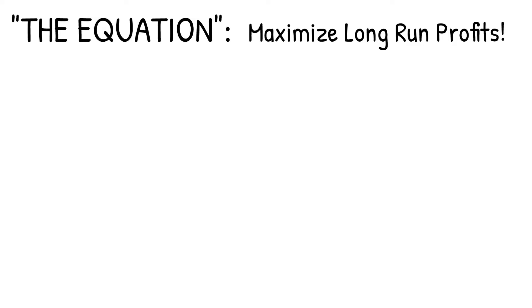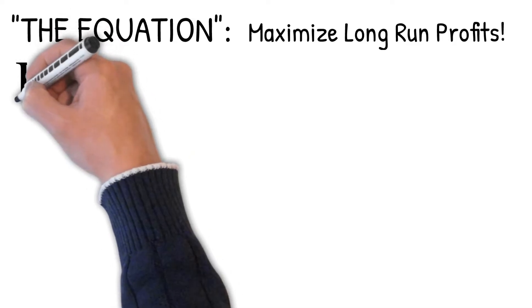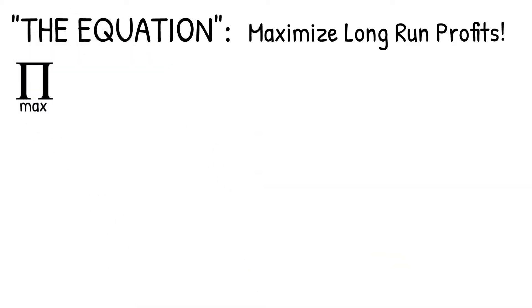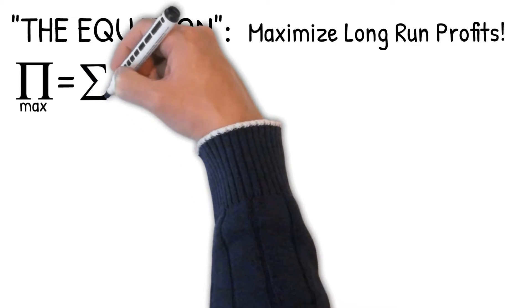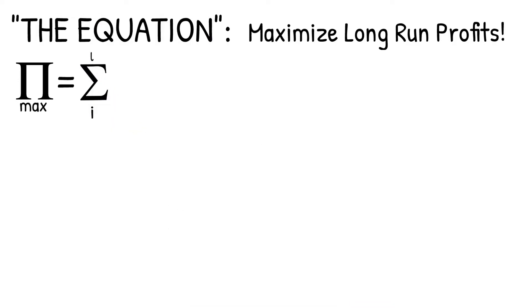We're going to go back to some high school mathematics here. We're going to start with the symbol pi for profit. And what we want to do is maximize that profit. And if you remember the sigmas from high school, where we're summing up things, there are three key sigmas.